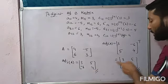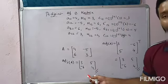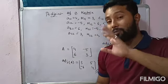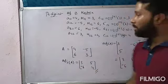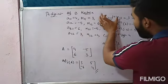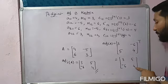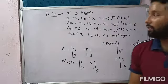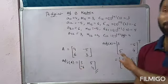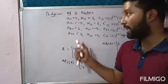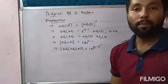Both the shortcut method and the long method give adj(A) = [3, 5; -6, 4] — there is no difference. The shortcut method just requires interchanging diagonal elements and changing signs of non-diagonal elements. For the long method, you find all cofactors and then transpose. Now there are some properties of the adjoint of a matrix.